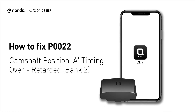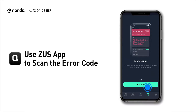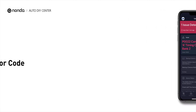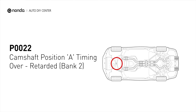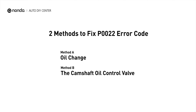If you are getting a P0022 error code, this video is going to show you two practical solutions to fix the error code at home. Use the Zeus app to scan your vehicle and see the error code P0022. It indicates the ECM has determined that the intake camshaft timing for Bank 2 is more retarded than what the ECM has commanded it be. Here are two simple DIY methods you can try to solve this problem.